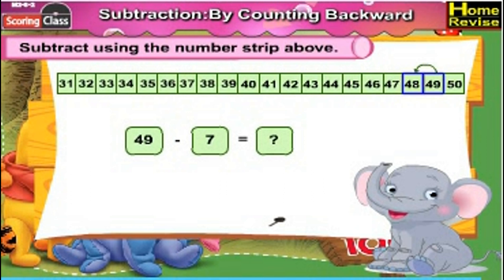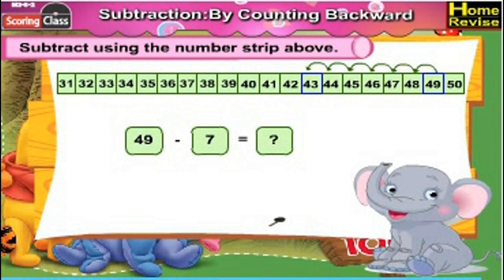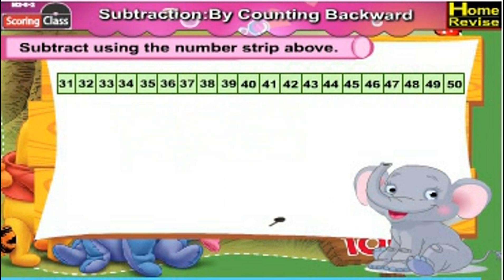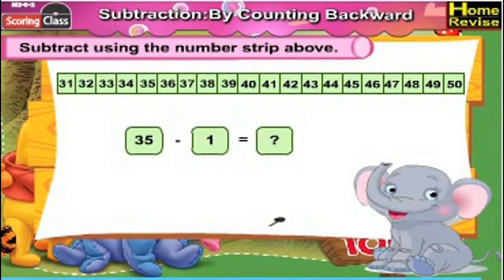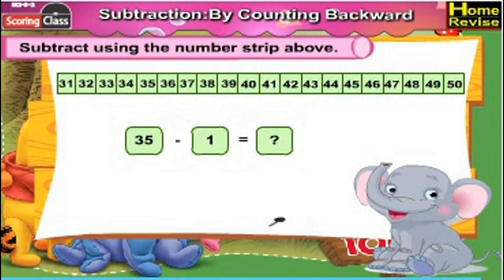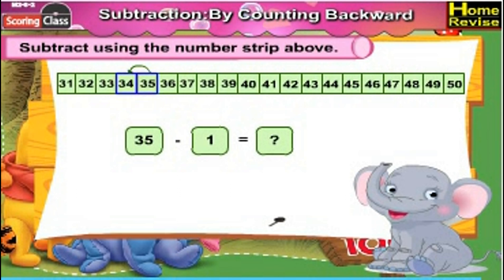49 minus 7: we need to subtract 7 from 49. Subtracting 7 means going seven places back. So 49 minus 7 is 42. 35 minus 1: subtracting 1 means going one step back, so 35 minus 1 is 34.